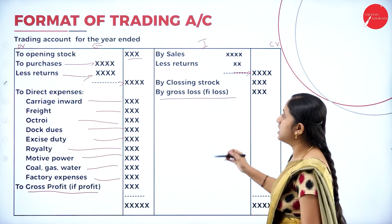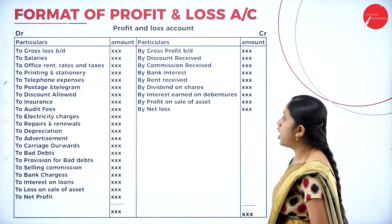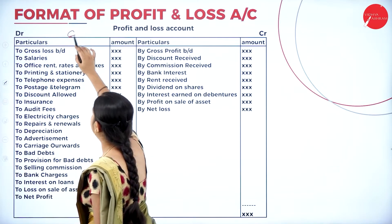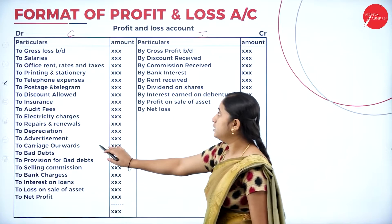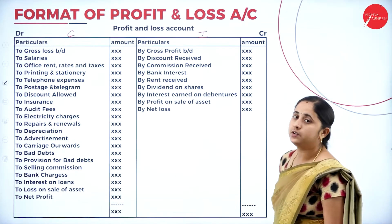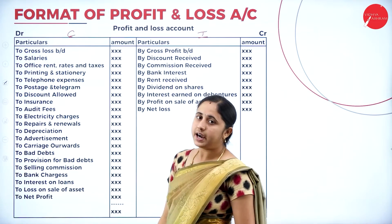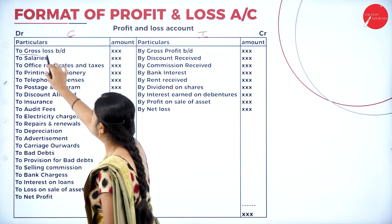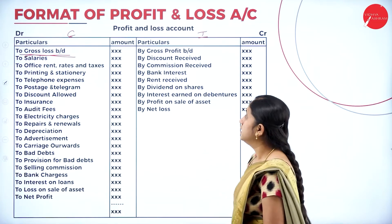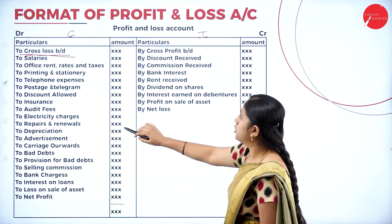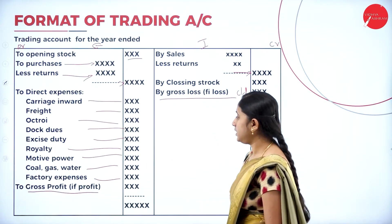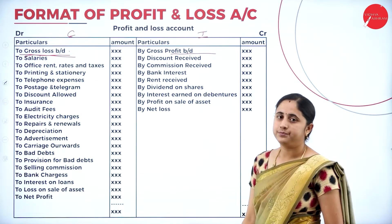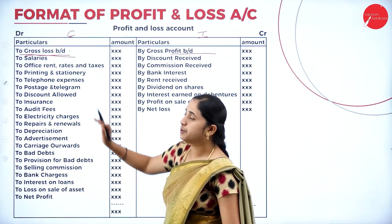After finishing the trading account, in the same statement we continue with the profit and loss account. The format has a debit side for all expenses and a credit side for all income, but here you consider all indirect expenses on the debit side and all indirect income on the credit side. Gross profit carried down is brought to the credit side of the profit and loss account, and gross loss carried down is brought to the debit side.